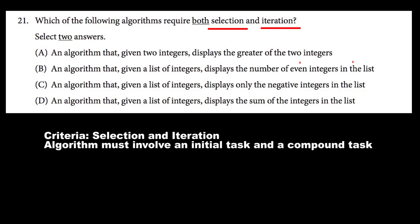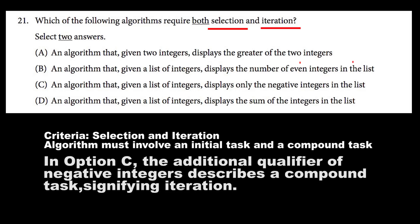Let's move on to C. An algorithm that, given a list of integers, displays only the negative integers in the list. Here also, it's kind of in the same boat as B. There are two facets of the task being accomplished — it displays only the negative integers, so not only does it have to display the integers, but it has to qualify that and select only the negative integers. Because there is a compound task here as well, selection and iteration are both involved, so our criteria is met — C is a good option.